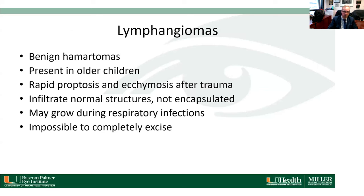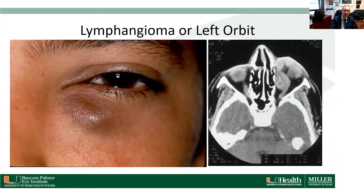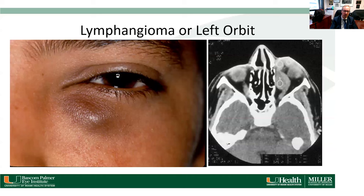Lymphangiomas can infiltrate into normal structures — they're not encapsulated, so they're very difficult to treat and excise. They may grow during respiratory infections and are impossible to completely excise. These days we usually inject these tumors with sclerosing agents. This patient, a young boy, had acute onset of proptosis with bluish discoloration of his left lower lid. On CT scan he has a multi-lobulated lesion — a lymphangioma — and the treatment of choice is to aspirate the fluid and inject a sclerosing agent such as bleomycin.